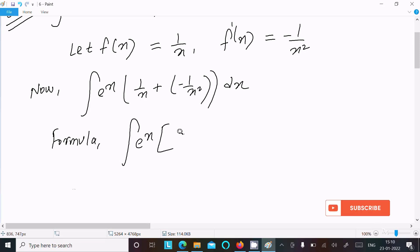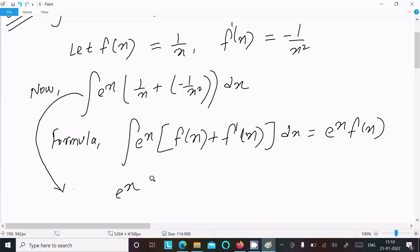Now, suppose we're writing the formula. We have the ready-made formula: integral of e to the power x times bracket f of x plus f dash x dx. If that follows this rule, then the result is e to the power x times f of x.